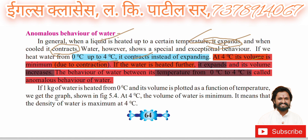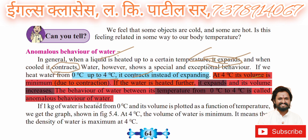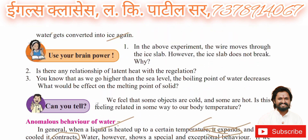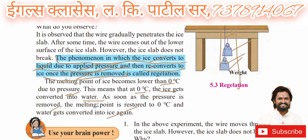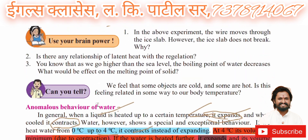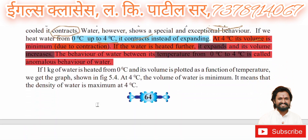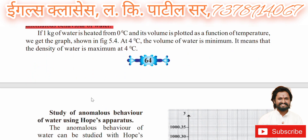If water is heated from 0 degrees Celsius and its volume is plotted as a function of temperature, at 4 degrees Celsius the volume of water is minimum.